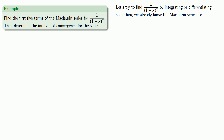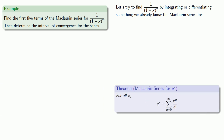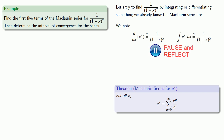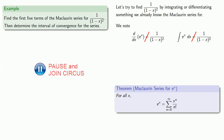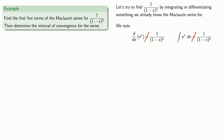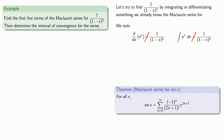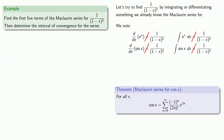We know the Maclaurin series for e to the x, so maybe the derivative or integral of e to the x will be 1 over 1 minus x squared. But the derivative of e to the x is e to the x, and the antiderivative doesn't work either. Well, if your first guess isn't right — actually, let's try some of the other functions we know. We know the Maclaurin series for sine of x and cosine of x, but neither their derivatives nor antiderivatives give us 1 over 1 minus x squared.